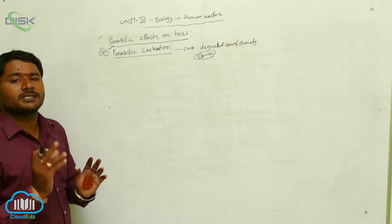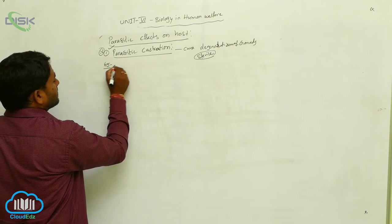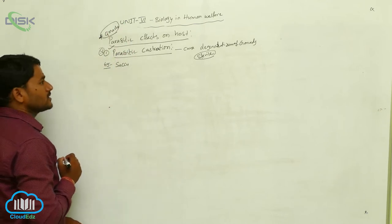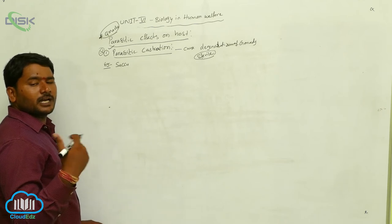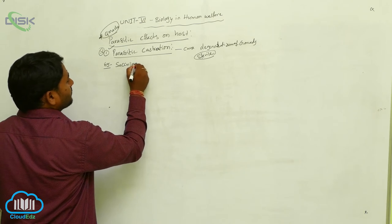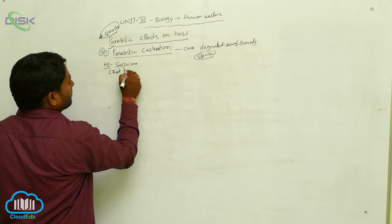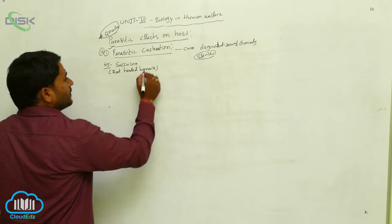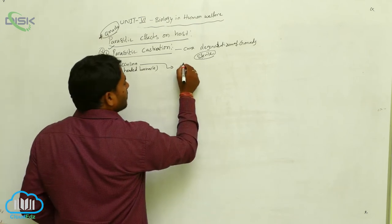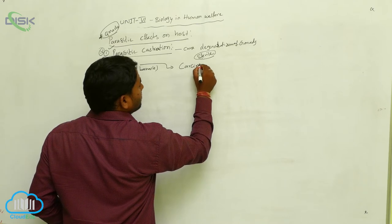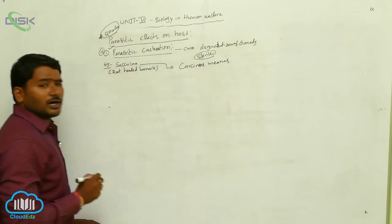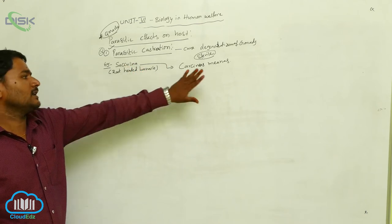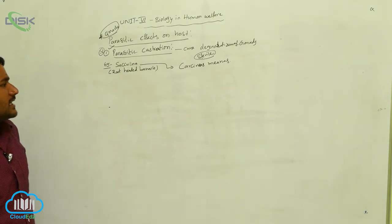The parasite damages gonads of the host. Example: Sacculina. This is a very important exam question. Sacculina is a root-headed barnacle which causes damage to the female gonads of Carcinus minas. Carcinus minas is a crab, and in the crab the female gonads are damaged by Sacculina, making the crab sterile. This is called parasitic castration.